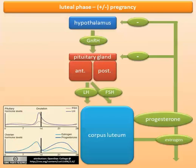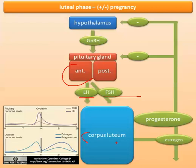With that background in mind, we move on to the luteal phase. Ovulation has occurred, and there are two sequences of events that can happen depending on whether there is a pregnancy or not. We'll start with the no-pregnancy scenario. The anterior pituitary makes gonadotropins — LH and FSH — and those act on the remnant of the follicle. After the egg ovulates, there's a remnant left over, and the gonadotropins act on that remnant to turn it into the corpus luteum.